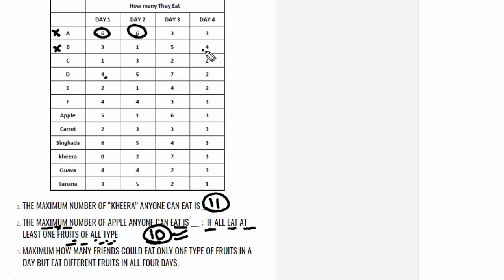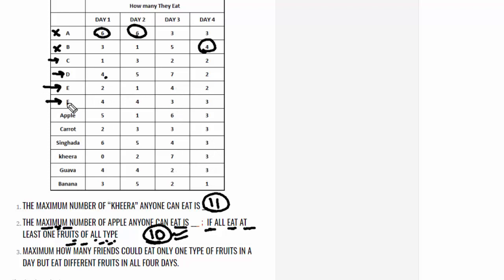B is again not a possible case because on day 4, B has 4 fruits to eat and we do not have any fruit available in quantity 4 on day 4. C is a possible case with values 1, 3, 2, 1 which are within the available quantities. D is also a possible case because D has 5, 7, 7, 2 — and we do have those quantities available. So we have possible cases. The answer should be 4 if there is no contradiction.